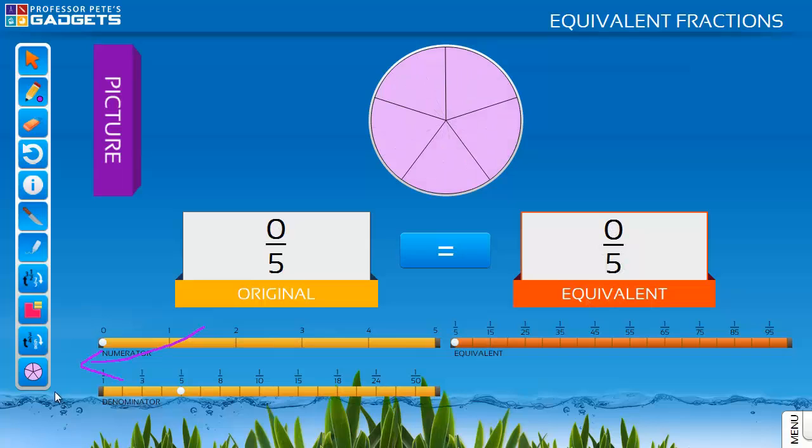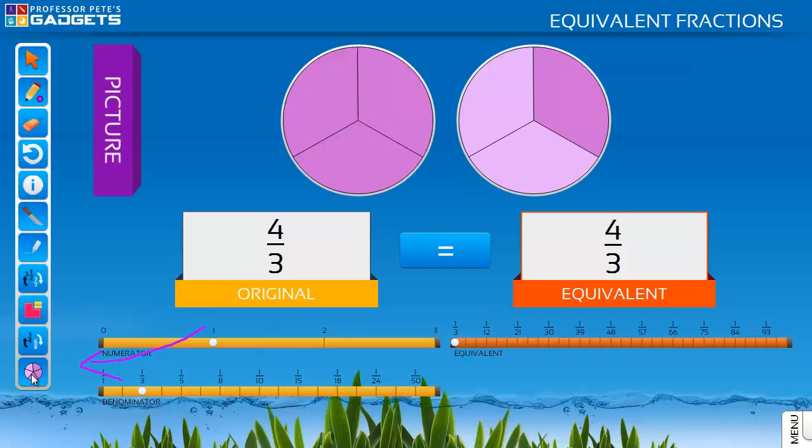All of this can be repeated with fractions larger than one. Start with say one third and click on the circle at the bottom of the toolbar to add one whole. The original fraction now shows the improper fraction four thirds and it is equivalent to sixteen twelfths.